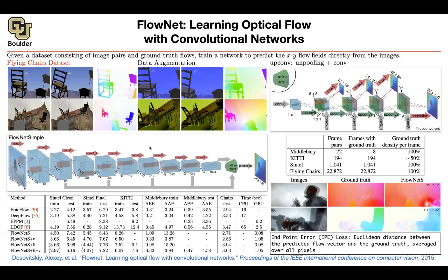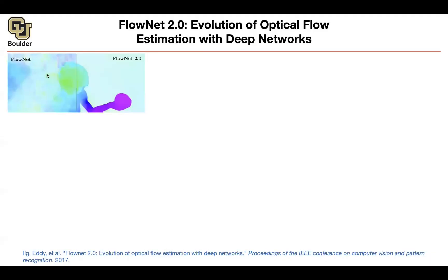So let's move on and try to make things better. This is what FlowNet is going to give you. This is what FlowNet version 2 is going to give you. So we already solved the problem, but we are not happy with our solution because we can do better.